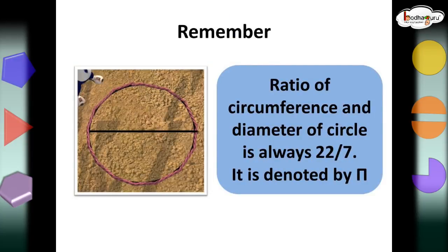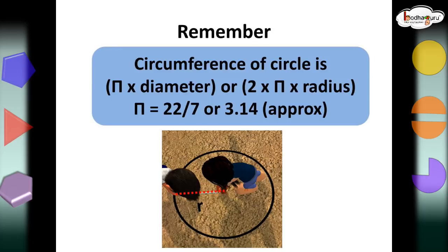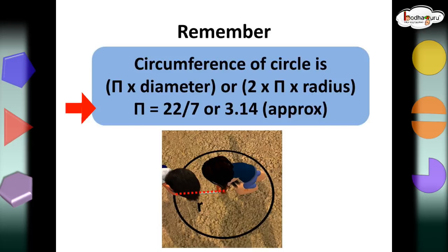So, remember children, the ratio of circumference and the diameter of the circle is always a constant, pi, whose value is 22 by 7. And this ratio is same for all the circles. If we know the radius or the diameter of the circle, we can find the circumference of the circle. The circumference of the circle is pi multiplied by the diameter of the circle. So, if we know the radius, then the diameter is equal to twice the radius. And hence, we can write 2r instead of diameter. And thus, the circumference then would be 2 pi r. Always remember, the value of pi is 22 by 7 or 3.14 approximately.